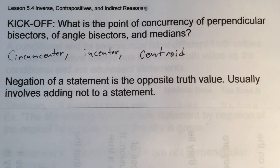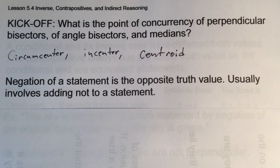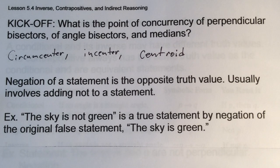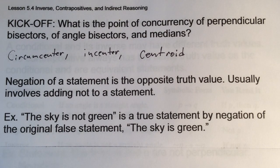Now we're going to jump back to conditional statements from last chapter, but with negation. The negation of a statement is the opposite truth value — it usually involves adding a 'not.' If a statement was true it becomes false, and if false it becomes true. For example, 'the sky is green' is false; its negation, 'the sky is not green,' is true.